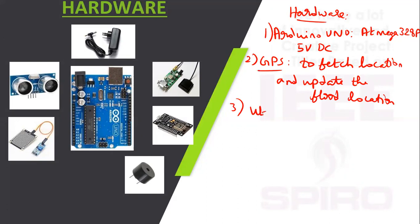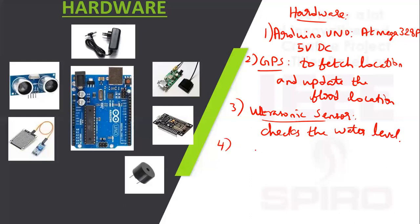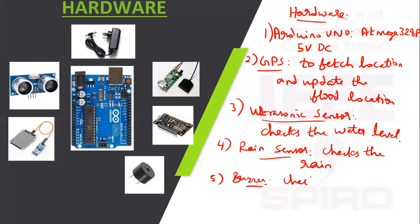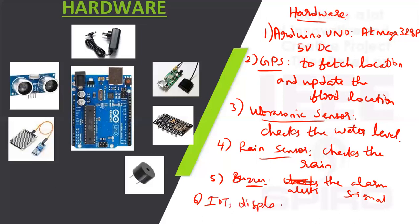The third component is the ultrasonic sensor, which checks the water level. The fourth component is the rain sensor, which checks for rain. A buzzer is used to check and trigger the alarm signal alert. IoT displays the result at the webpage.